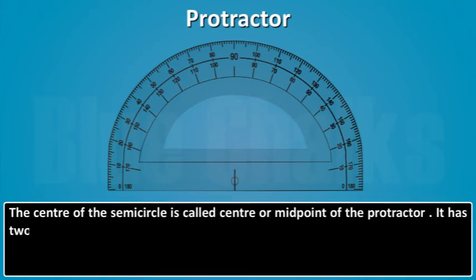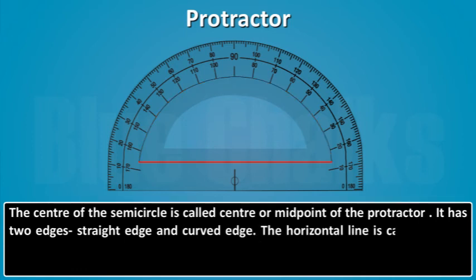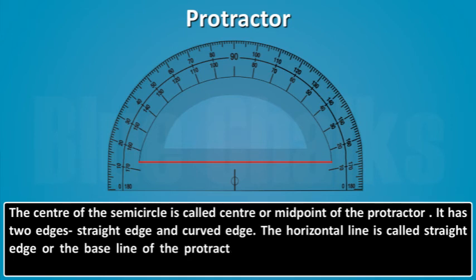It has two edges: straight edge and curved edge. The horizontal line is called straight edge or the base line of the protractor.